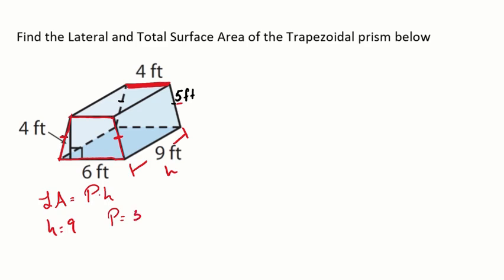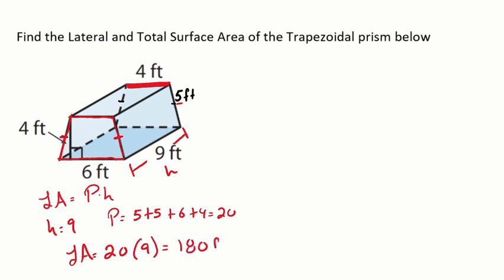Adding all sides: five plus five plus six plus four gives a perimeter of 20. Multiplying the perimeter of 20 times the height of the prism, nine, gives a lateral area of 180 feet squared.